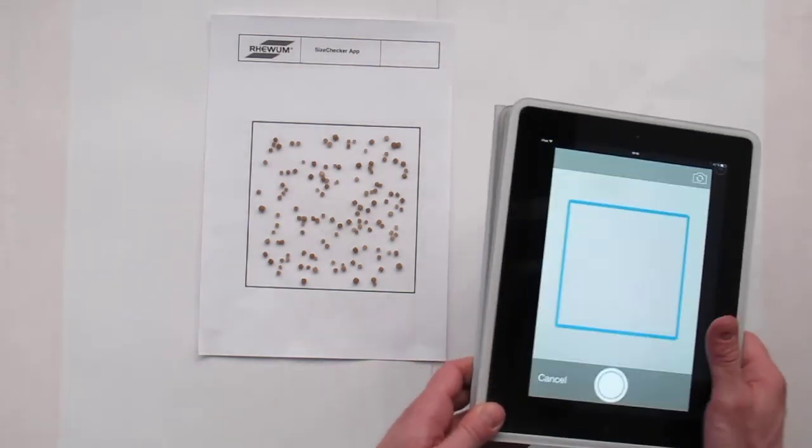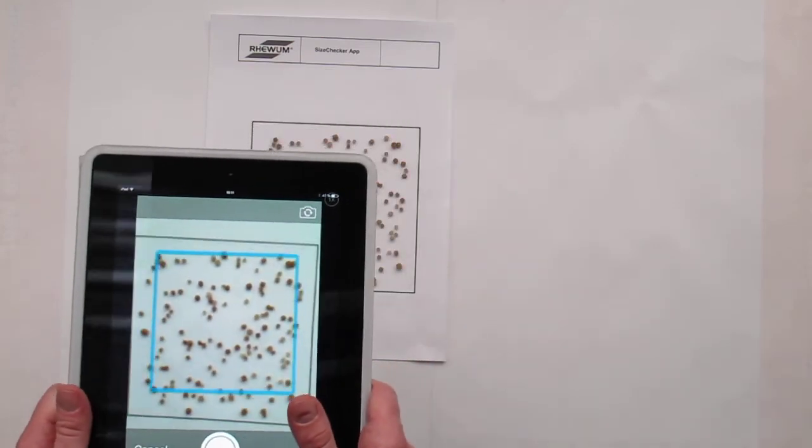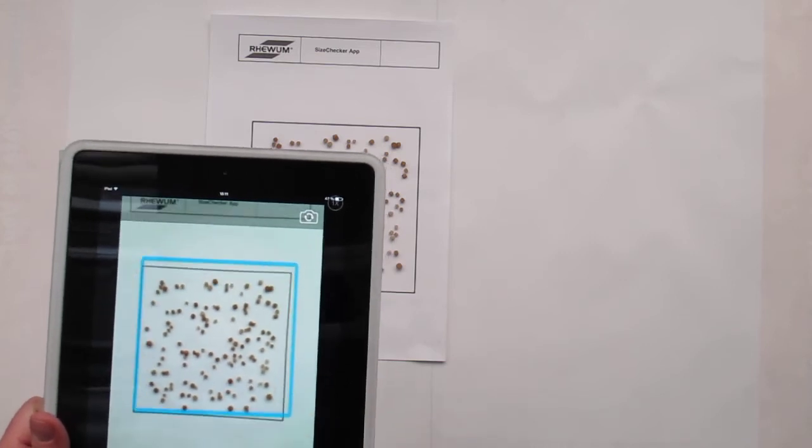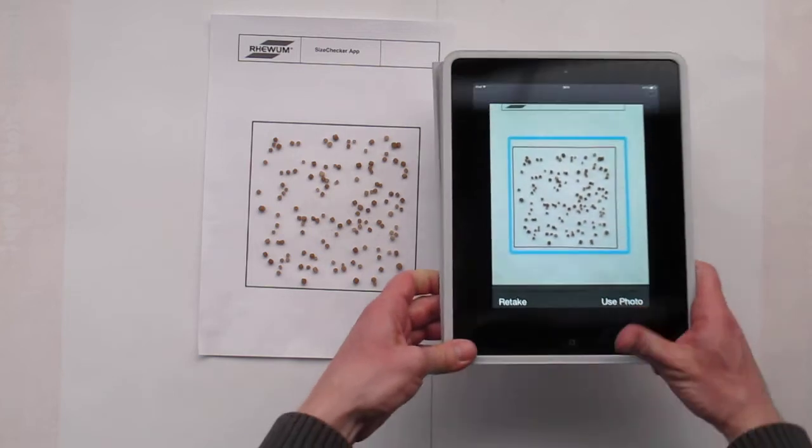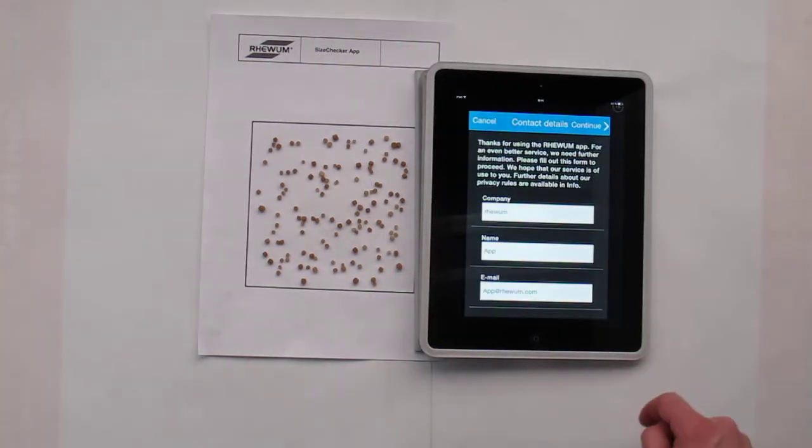Now we can make the photo. Try to bring the rectangle to the square of the pattern, like this, and make the photo. You can now select use the photo.